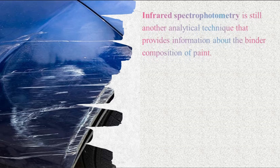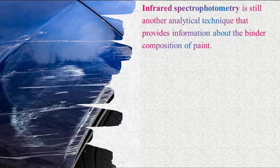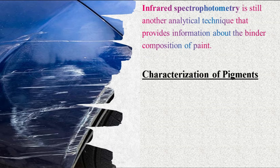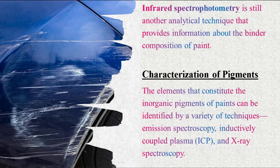Another technique that provides information about the binder composition of paint is infrared spectrophotometry. Binders selectively absorb infrared radiation to yield a spectrum that is highly characteristic of a paint specimen. Characterization of pigments: The elements that constitute the inorganic pigments of paint can be identified by a variety of techniques such as emission spectroscopy, inductively coupled plasma and X-ray spectroscopy. The emission spectrograph can simultaneously detect 15 to 20 elements in most automobile paints. Some of these elements are relatively common to all paints and have little forensic value, while others are less frequently encountered and provide excellent points of comparison between paint specimens.